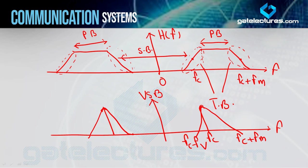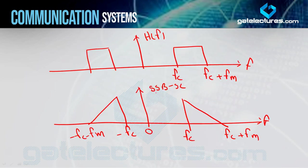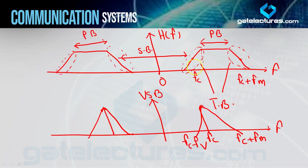Agar aap log ko yeh spectrum bahut achhe se samajh mein aaya hai, toh aap log ke liye ek home work hai. Jis tarah se maine yahan par upper side band generation ke liye filter consider kiya tha - pehle humne ideal filter consider kiya aur phir humne non-ideal filter consider kiya for the upper side band generation - aap log lower side band ke liye try kariyega. Agar aap logon ko koi difficulty ho, toh aap log comment section mein zaroor post kariyega.